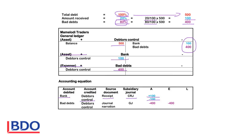A second entry will be completed for bad debts — that is the expense that will decrease profits, so equity will decrease with 400. Debtors' control will be credited to decrease the asset, because this person doesn't owe the money anymore. This entry is recorded in the general journal, and a journal narration will be completed.